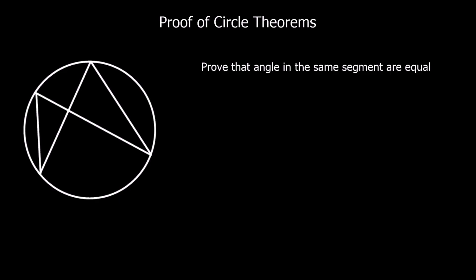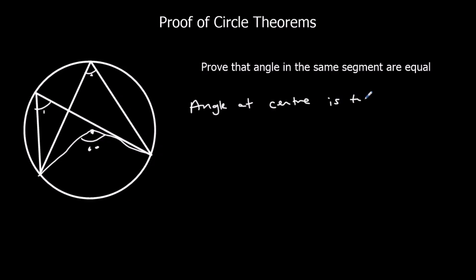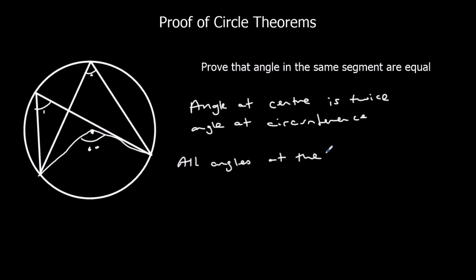Next, prove that angles in the same segment are equal. For this one we just use the previous proof. Because we've already proved that the angle at the centre is twice the angle at the circumference, and both angles here are at the circumference from the same arc, all angles at the circumference are equal in the same segment.